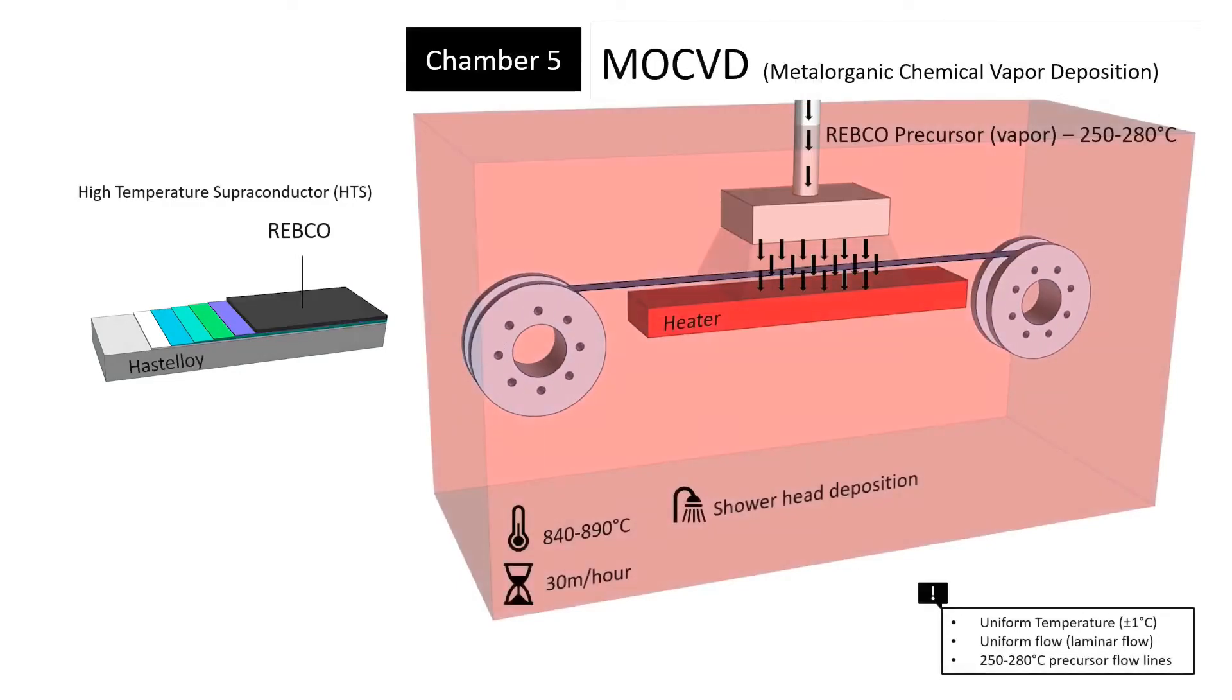The high-temperature superconductor layer, REBCO in our case, is then deposited using a metalorganic vapor deposition machine at around 870 degrees Celsius. This two micrometer thick layer is responsible for the zero resistivity at cryogenic temperatures.